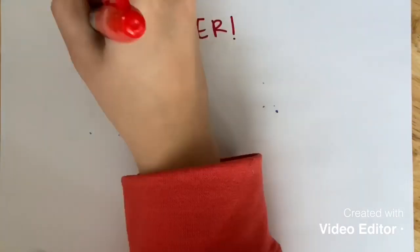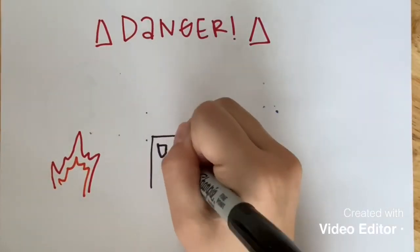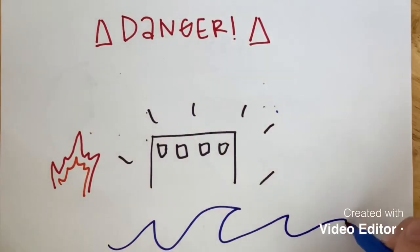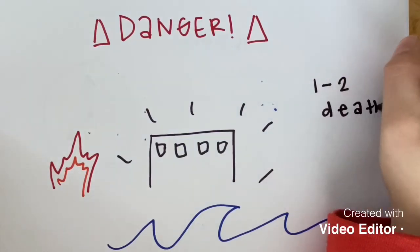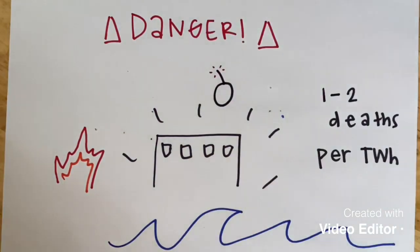Risks of hydroelectric power plants include fires, collapses of dams, and flooding. One to two employees die every terawatt hour. Additionally, for threats wanting to deprive a city of its electricity, hydroelectric plants are an easy bomb target.